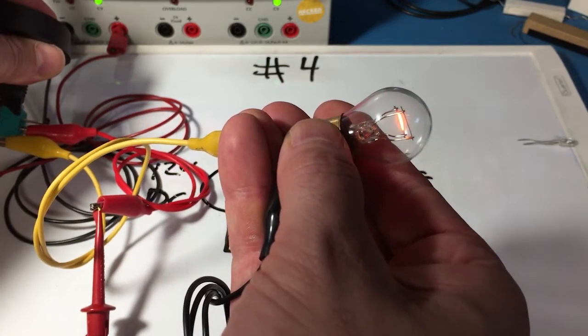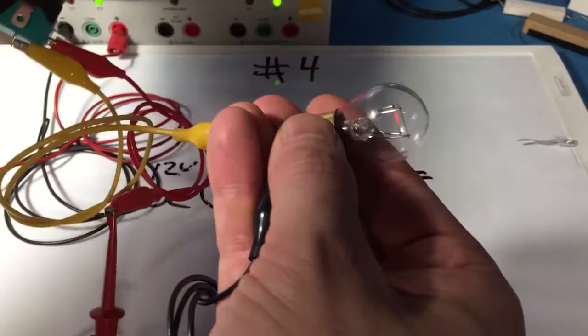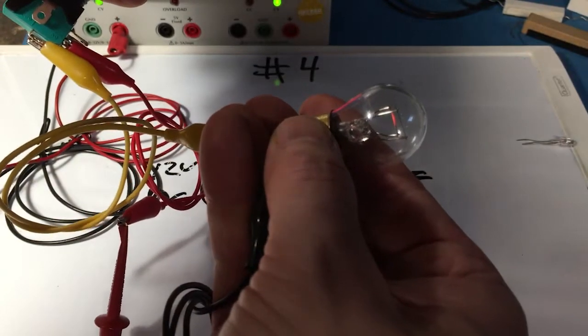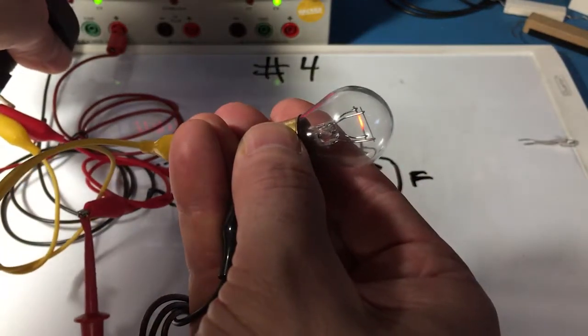That looks nice and red in there. If I cover up the light right there, you can see it's barely glowing, and there's a lot of infrared light but not a lot of visible light that humans could see.